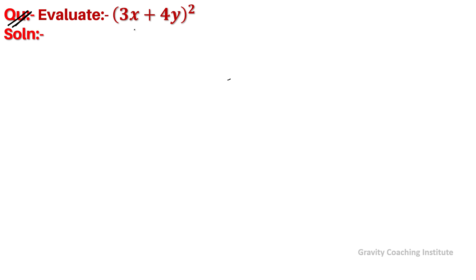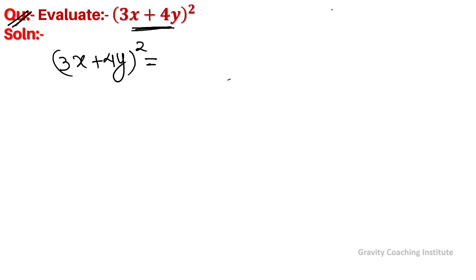Question: Evaluate (3x + 4y) whole square. So we use the identity a plus b whole square equal to a square plus 2ab plus b square.